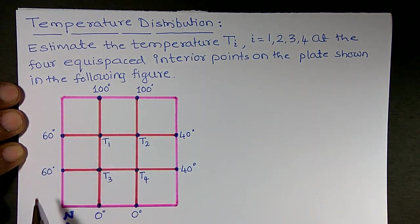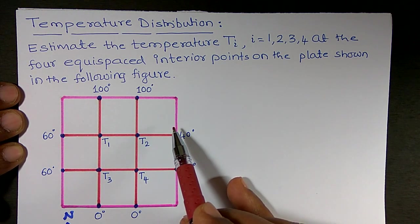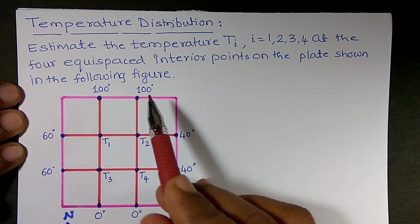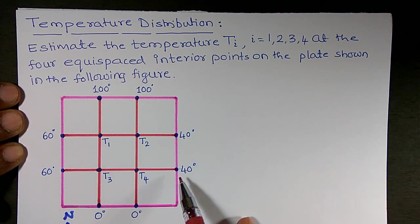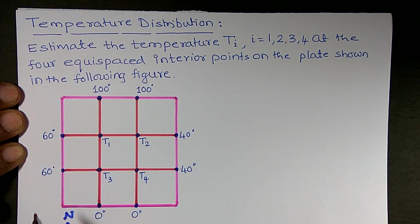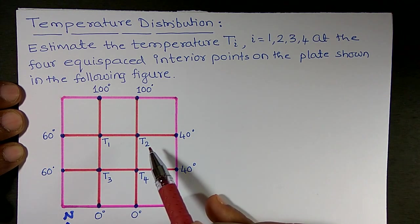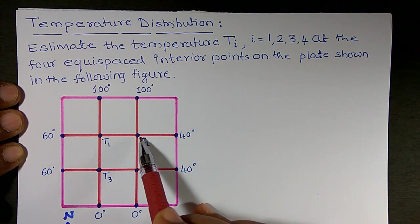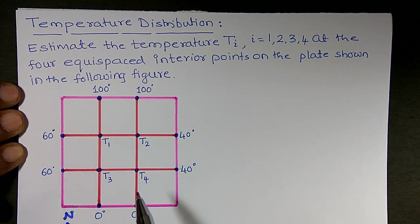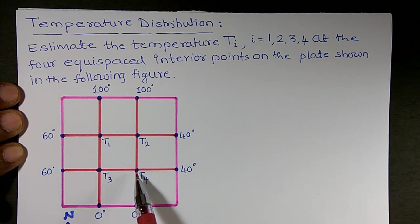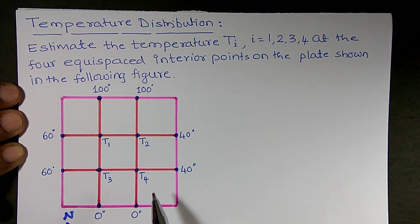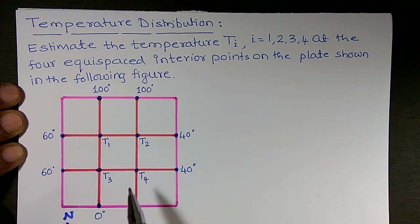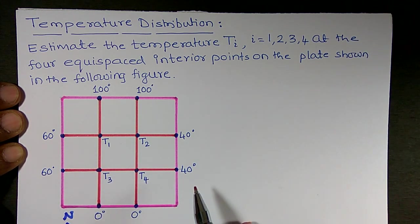They have given a square plate with temperatures at the boundary points: 100 degrees centigrade, 100 degrees, 40 degrees, 40 degrees, 60 degrees, and 60 degrees. We want to find the temperature at four interior points, denoted T1, T2, T3, and T4.